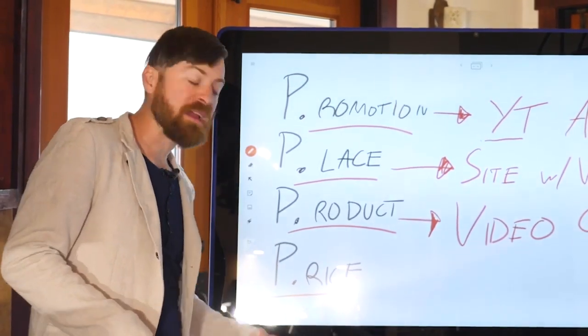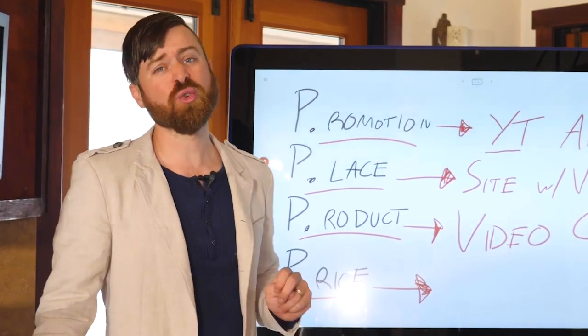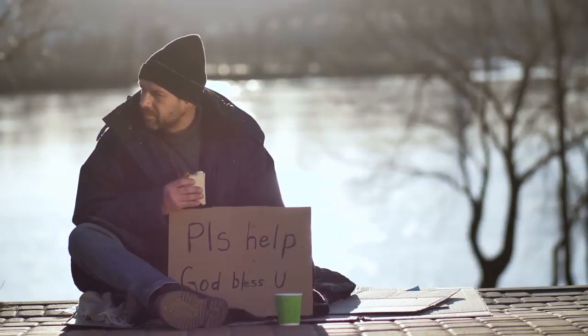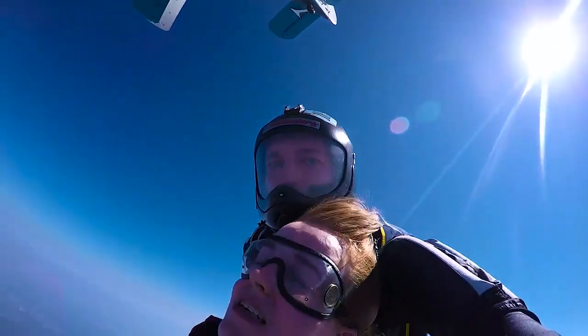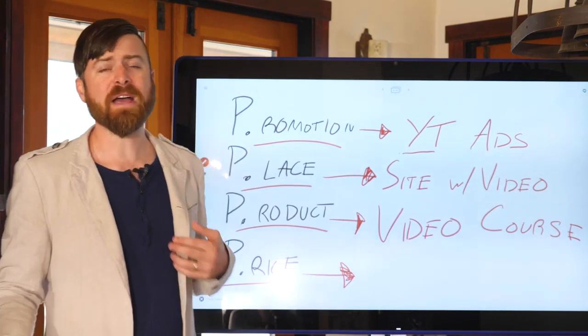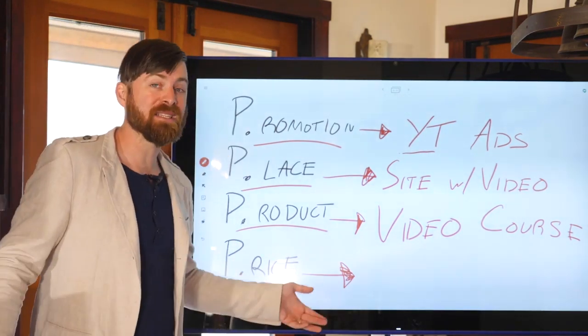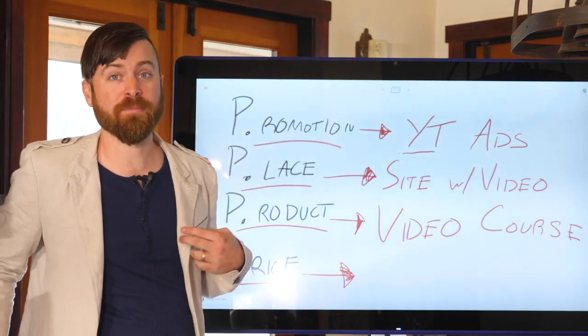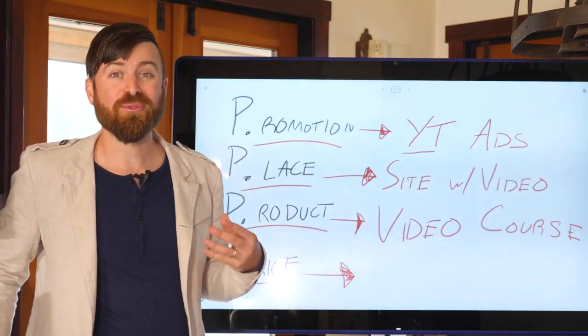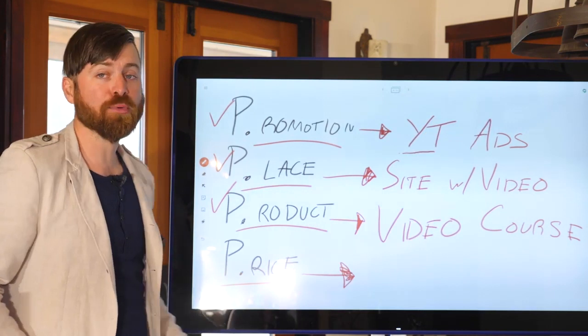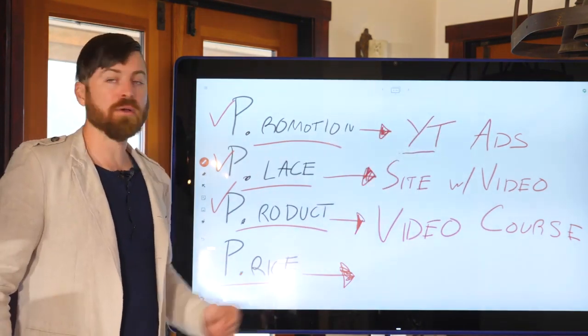Last but not least is the price. The price needs to make sense. My video training course is $2,000 and that's a price that makes sense for the sorts of customers I'm looking for. I'm looking for people who had some success at some point in their lives and are action takers. But if I were to charge $5,000 or $10,000, that price wouldn't make sense. People don't usually have credit limits that high. So if just the price was wrong, nothing would work.